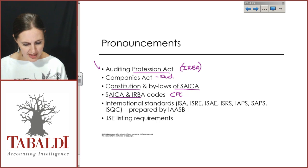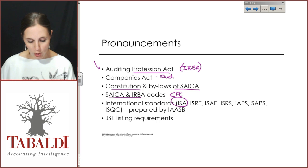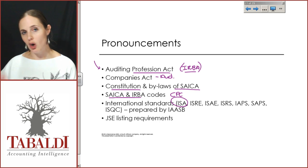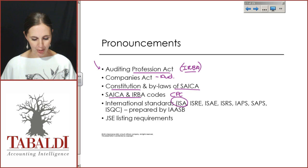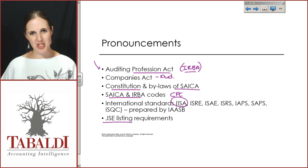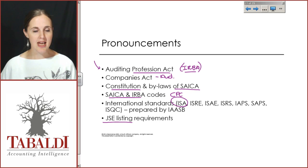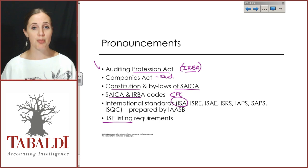The International Standards on Auditing — the ISAs — are the guidelines we follow in South Africa. The 'I' stands for international, meaning these standards apply globally. IRBA has adopted them as the way we conduct audits in South Africa, even though they weren't written specifically for South Africa. If our clients are listed, we also need to be aware of the JSE listing requirements. As auditors, we must be aware of all laws and regulations that impact how we do our job and behave as professionals.